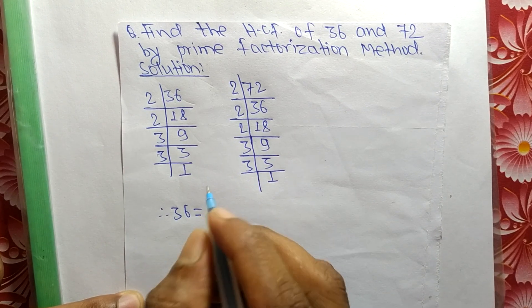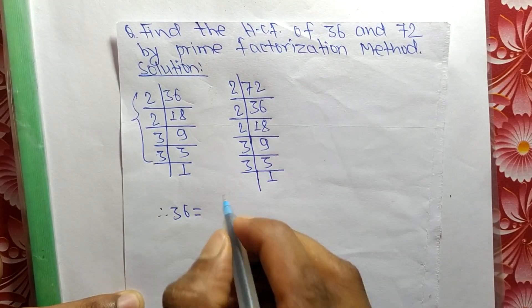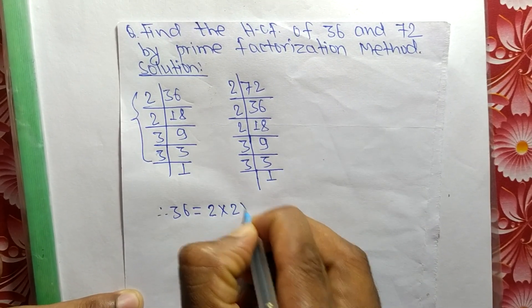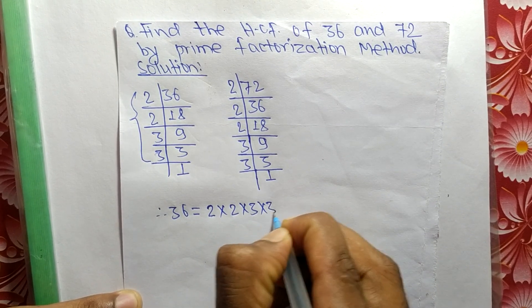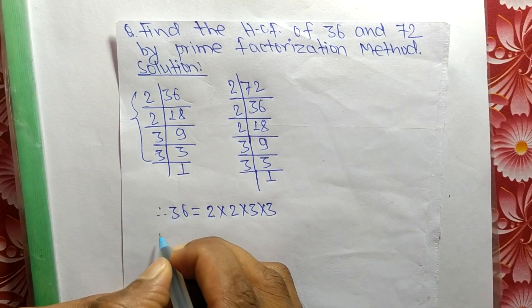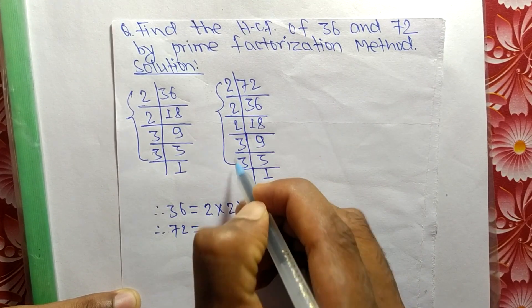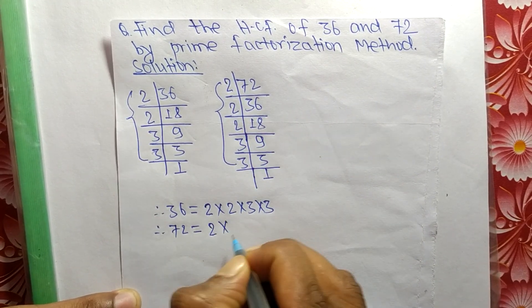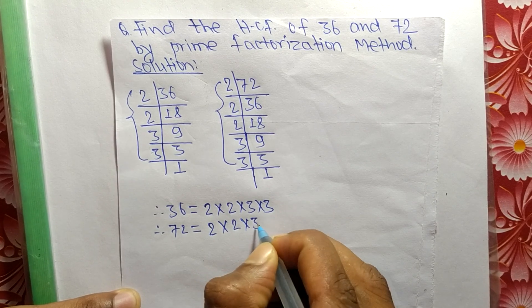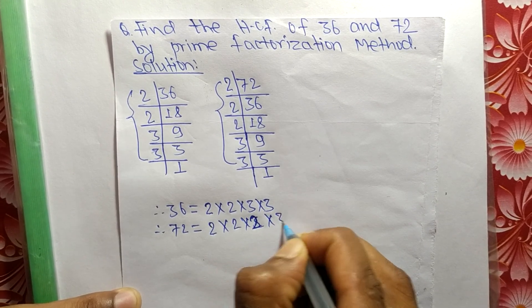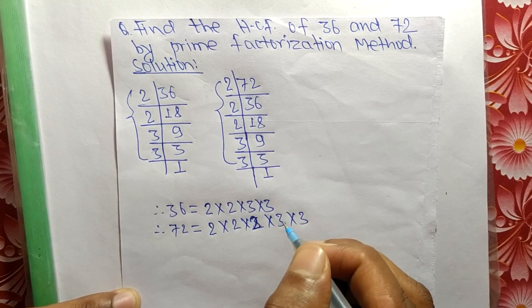36 equals 2 times 2 times 3 times 3. Likewise, 72 equals 2 times 2 times 2 times 3 times 3.